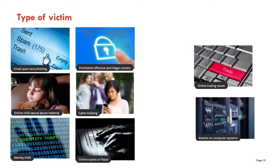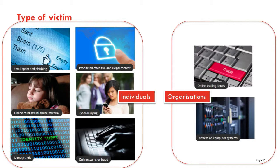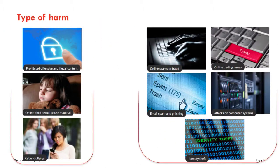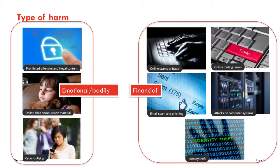For example, cybercrimes can be classified according to the type of victim they affect. In this case, we can distinguish between attacks on individuals such as cyberbullying and identity theft, and those affecting organizations such as attacks on computer systems. Another criterion for classification could be the type of harm caused. In the case of cyberbullying or abusive material, the harm can be physical and or emotional, but identity theft or scams only cause financial harm. Depending on the focus of the essay, different people could come up with different criteria to group these crimes. That is why they are considered interpretive schemas.